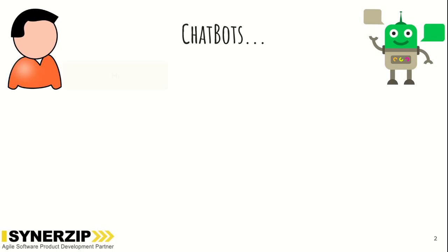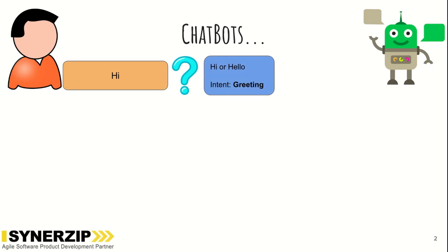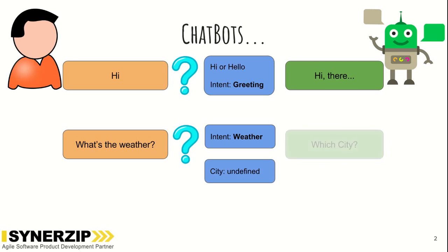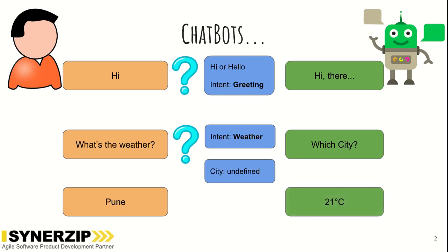There is a user who sends a message to the bot, and the bot has a task to derive the intent of the message. Once the bot understands the intent, it can take a necessary action. For example, if the user is requesting the weather, the bot understands the intent but may find city information missing. It comes back to the user and asks for that information, and once it has complete information, the bot responds with the weather of the city.